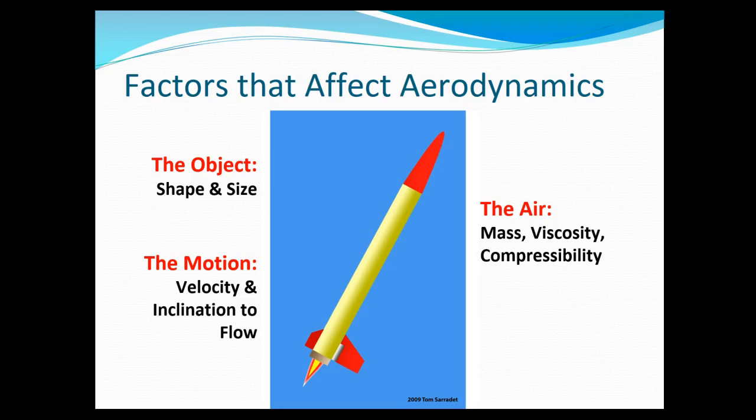Where it says inclination to flow here, what it's really referring to is the angle at which that object is with respect to the airflow. And then the air itself is important—the mass of the air, viscosity or how sticky it is, and the temperature of the air, which relates to the density of the air.